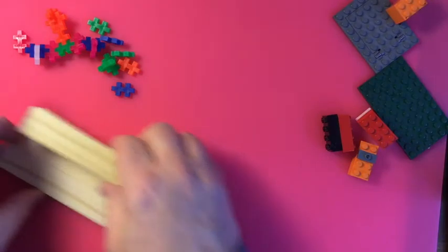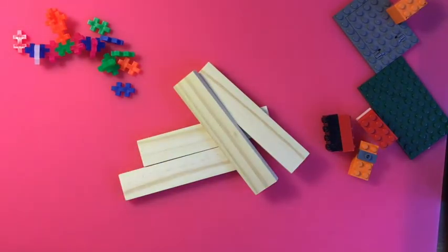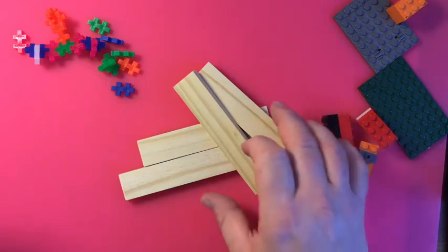So you got Legos, you got Kiva planks, which are nice because they're just simple wood that they can build some amazing things out of.